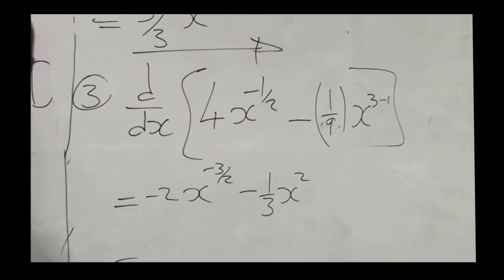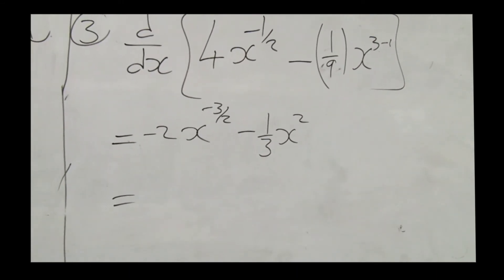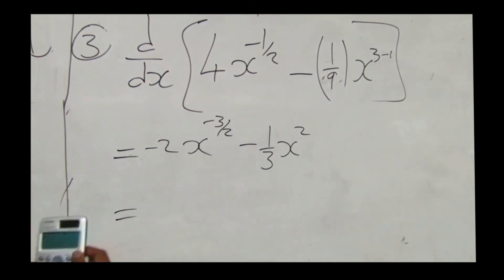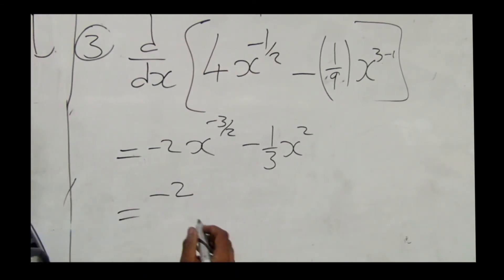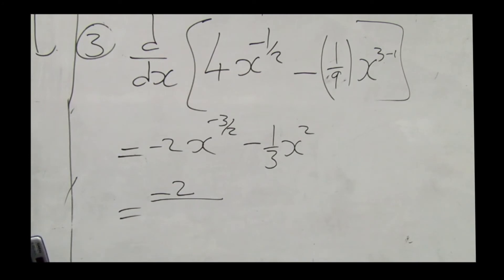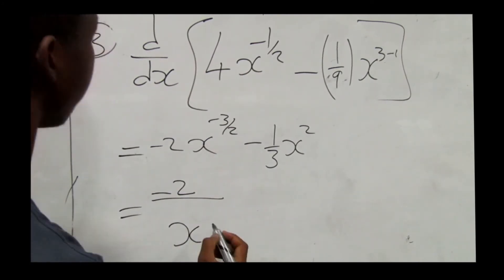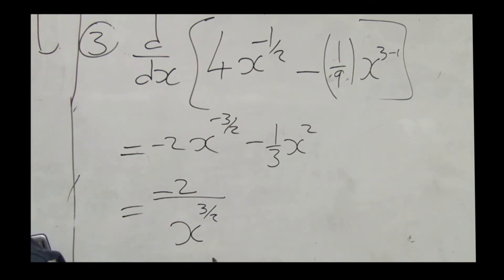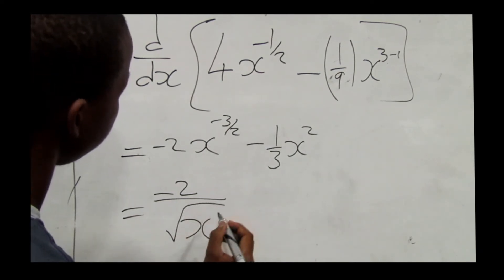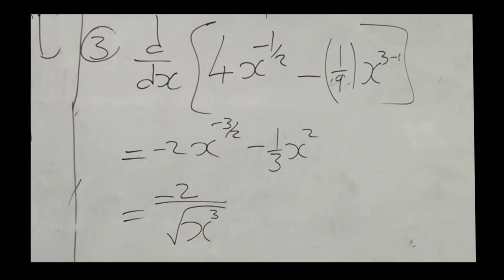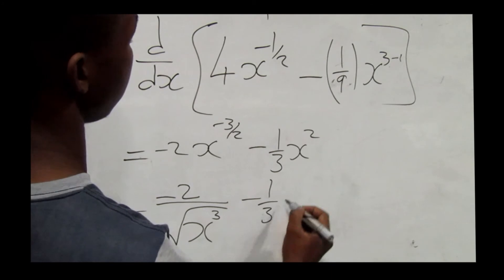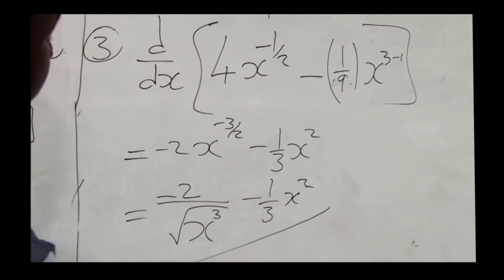Remember we don't write answers with negative exponents — we need to make the exponent positive. To make negative 3/2 positive, we move x to the denominator, giving us 1 over x to the power 3/2, which is the same as 1 over x to the power 3/2. This is our final answer for number three.